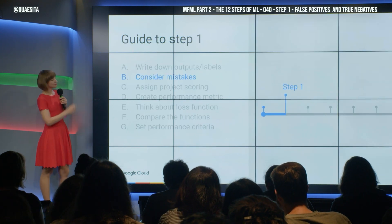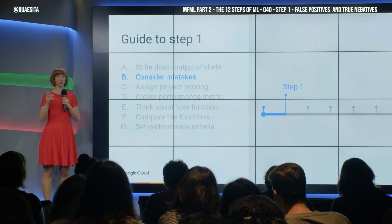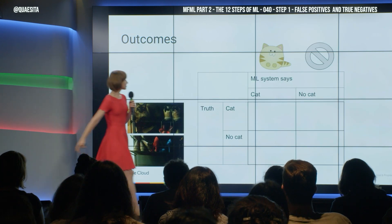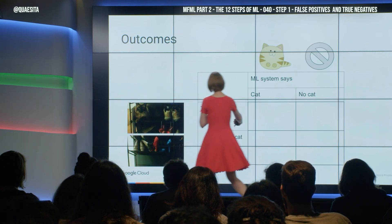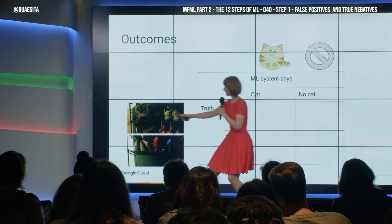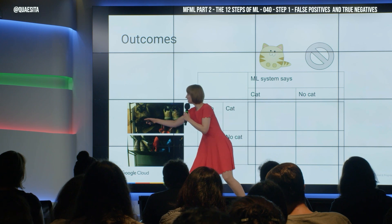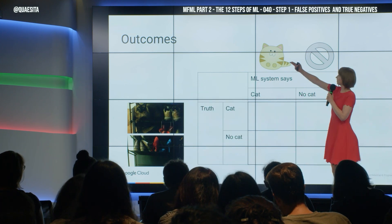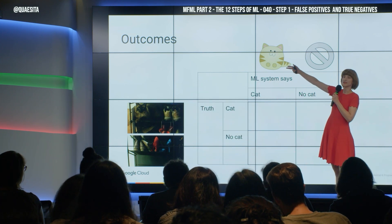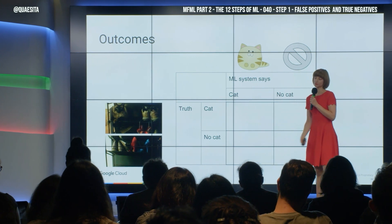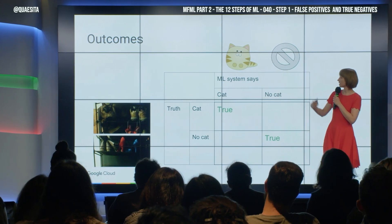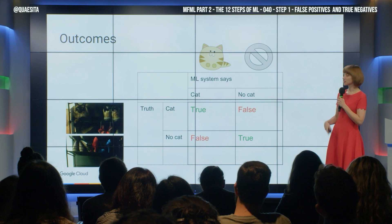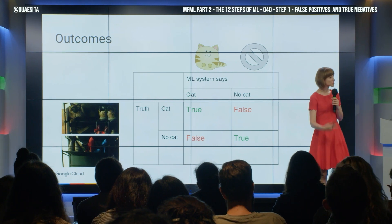What's next? Consider mistakes — what mistakes can it make? This is a very simple setting, so there are only two things that can be true: cat, so you can see him in there, or not cat. The machine learning system only has those options. So if there's a match, we call that a true something. If there's a mismatch, the system's being false with us.